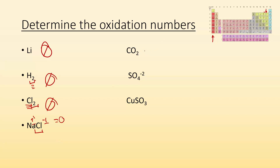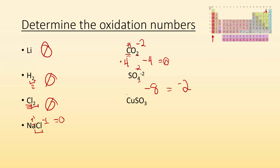CO₂: oxygen is reliably minus two. Two of them means minus four from all the oxygen. The whole thing has to equal zero since CO₂ is neutral, so I need a plus four — and there's only one carbon, so carbon must be plus four. Each oxygen is minus two, each carbon is plus four. SO₄²⁻: overall it has to equal minus two. Each oxygen is minus two, there are four of them, so I have minus eight from oxygen. To get from minus eight to minus two, I need a positive six. There's one sulfur, so sulfur must be plus six.